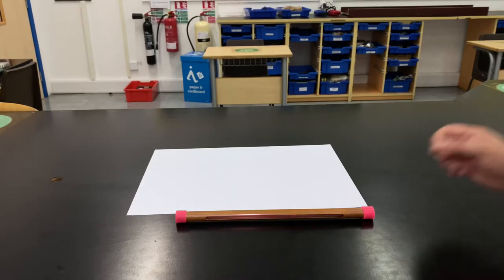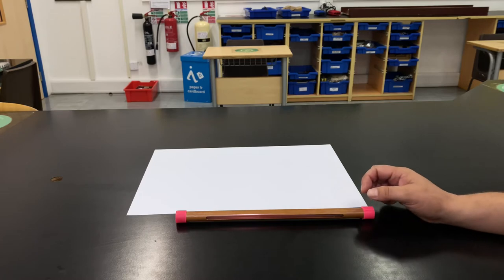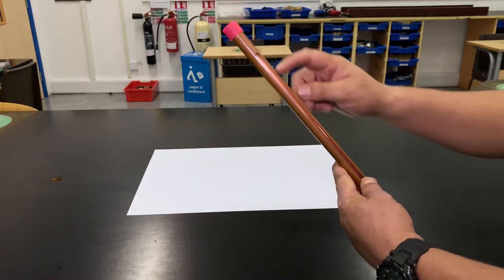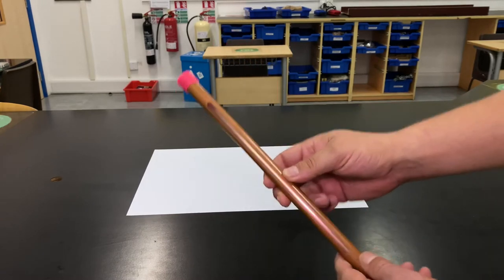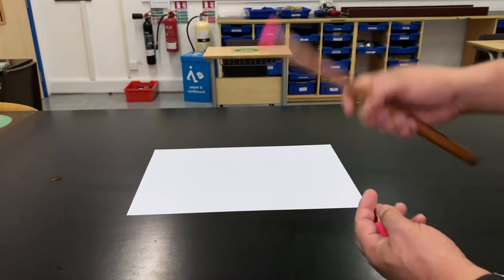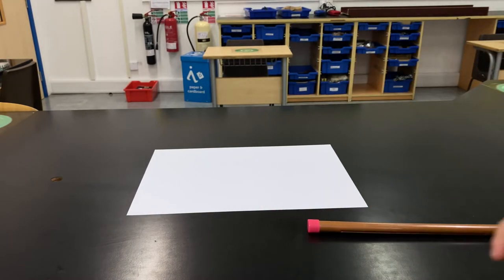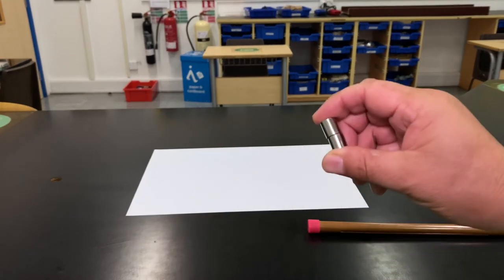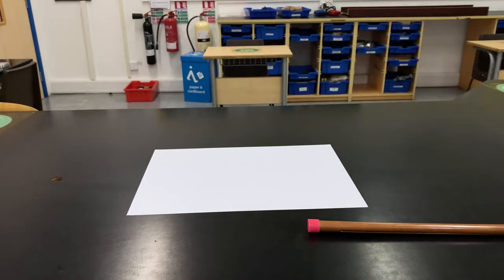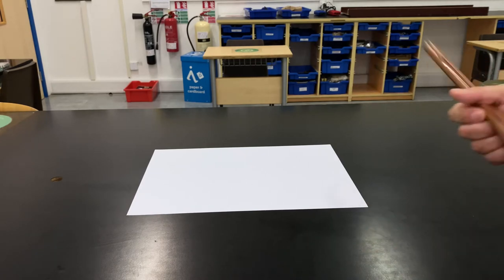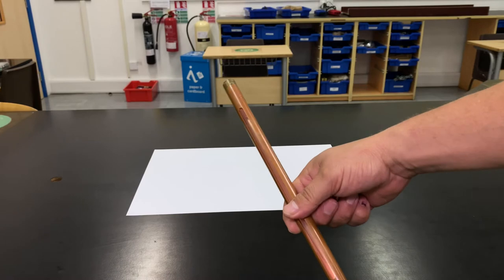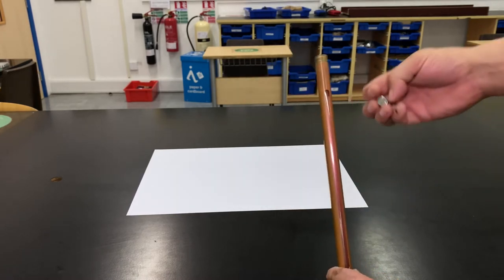Right, here we have a very simple demonstration to show Lenz's law in action. We've got a piece of copper tubing with a little transparent window down the side, because inside we have two neodymium magnets. Now copper, as we know, is a non-magnetic material. However, when we pass the magnets down through the copper tubing, they actually travel really slowly.